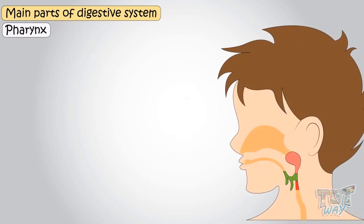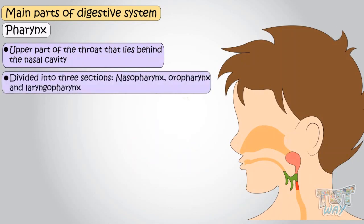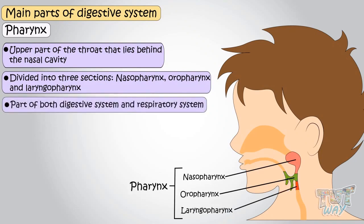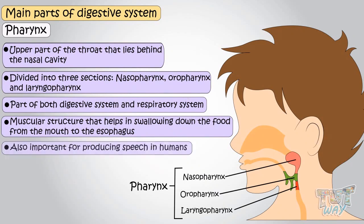Pharynx — the pharynx is the upper part of the throat that lies behind the nasal cavity. It is divided into three parts called nasal pharynx, oral pharynx, and laryngopharynx. Pharynx is part of the digestive as well as respiratory system. It is a muscular structure that helps in swallowing food from the mouth to the esophagus. It is also important for producing speech in humans.